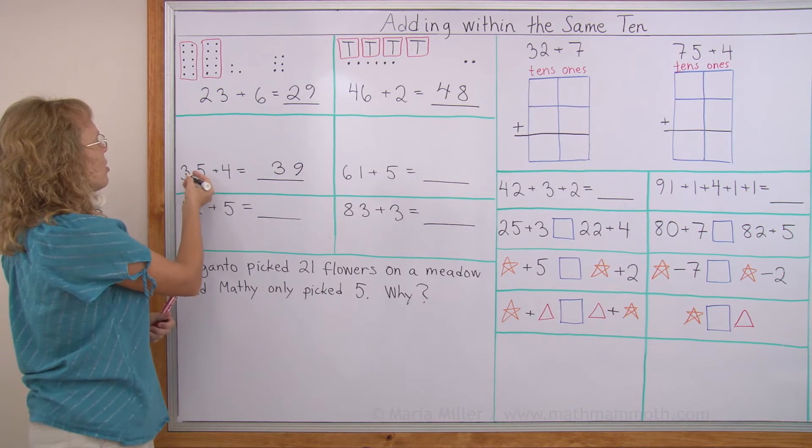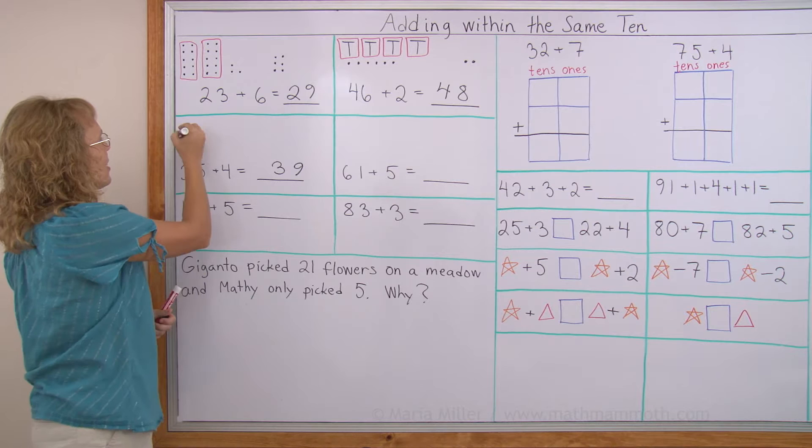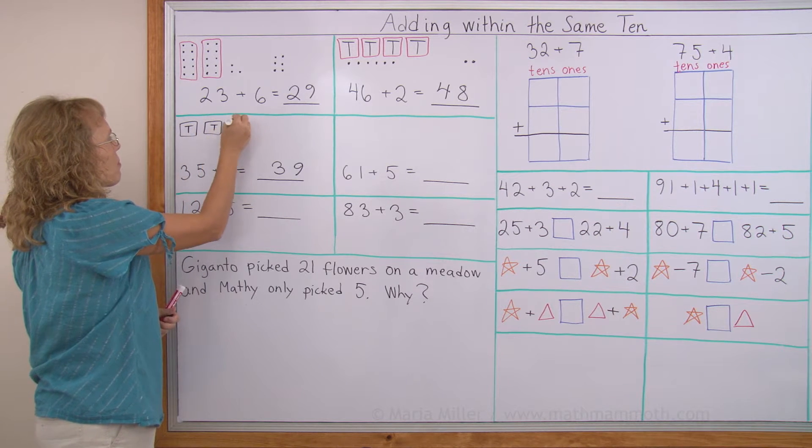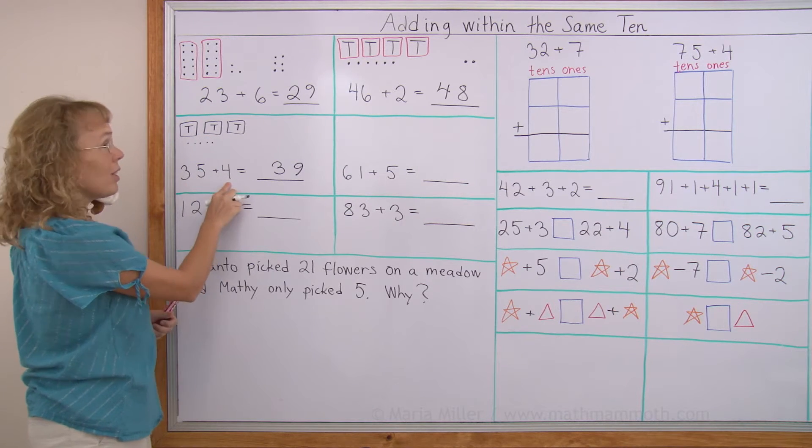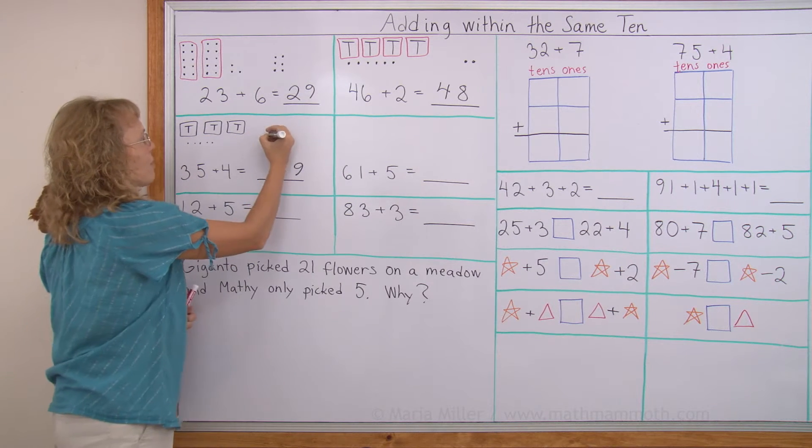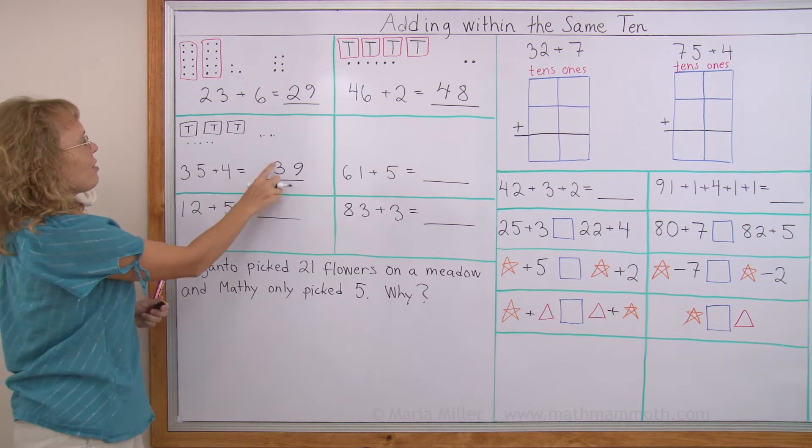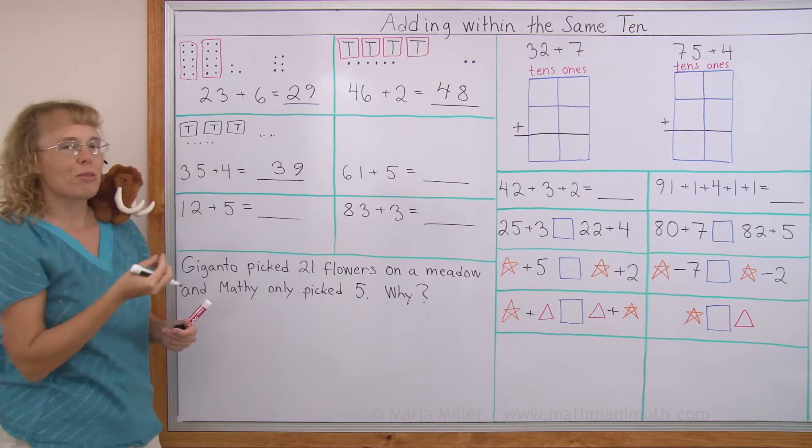I can also show it to you with a model. 3 10s would be like this. And then 5 little dots. And 4, I add 4 little dots. And so I have 3 10s and then 5 plus 4 equals 9.